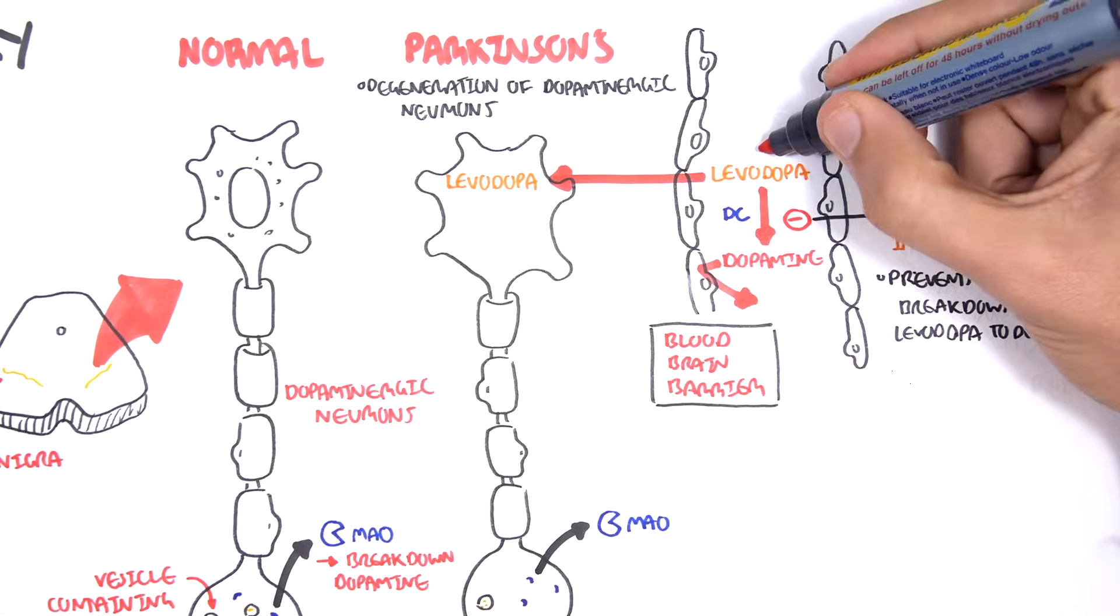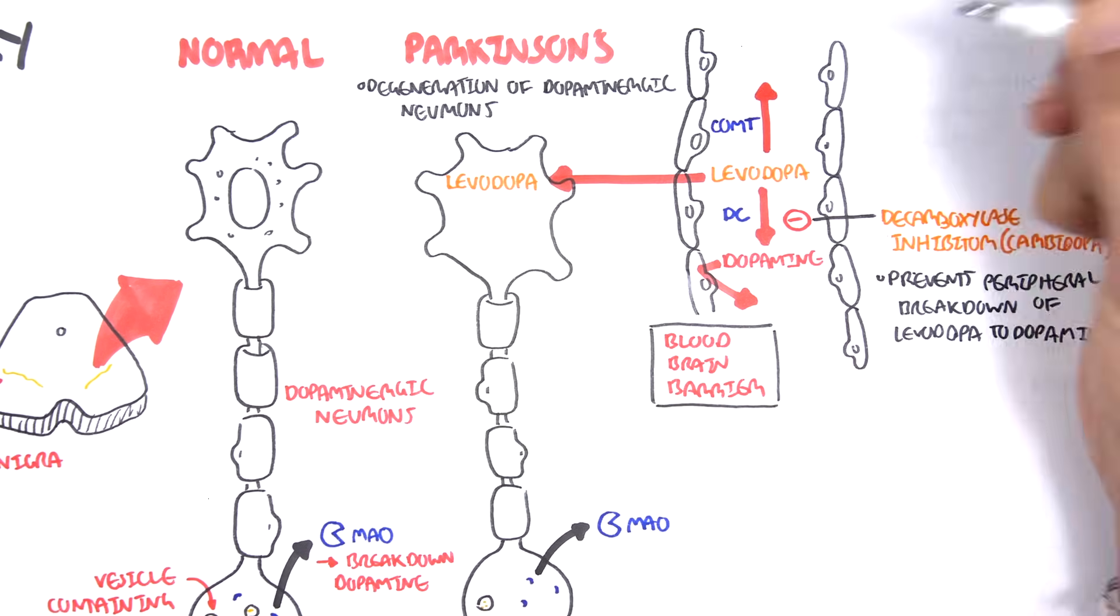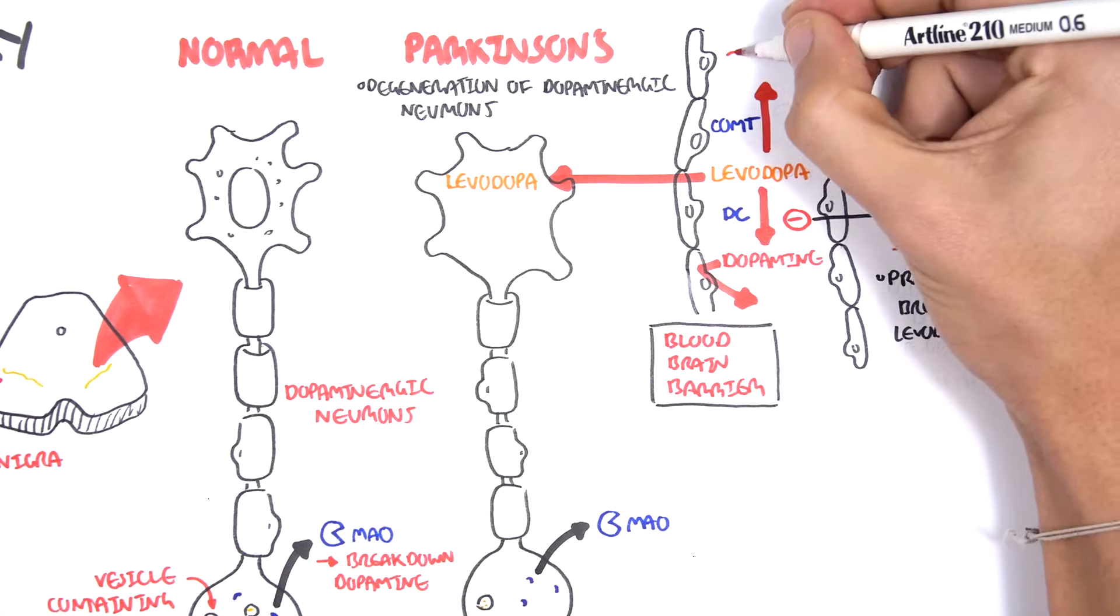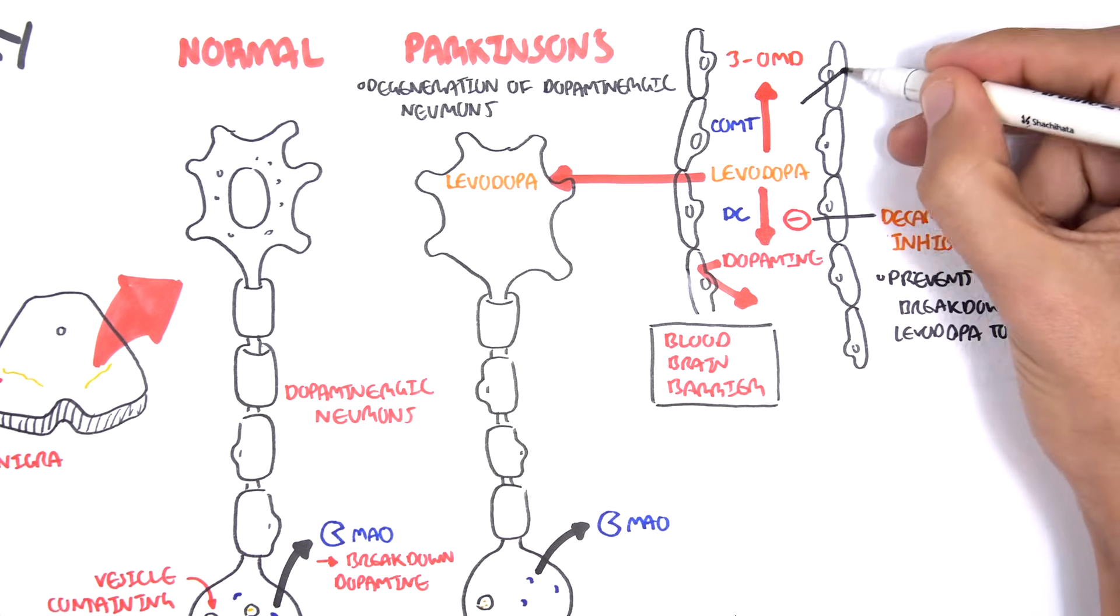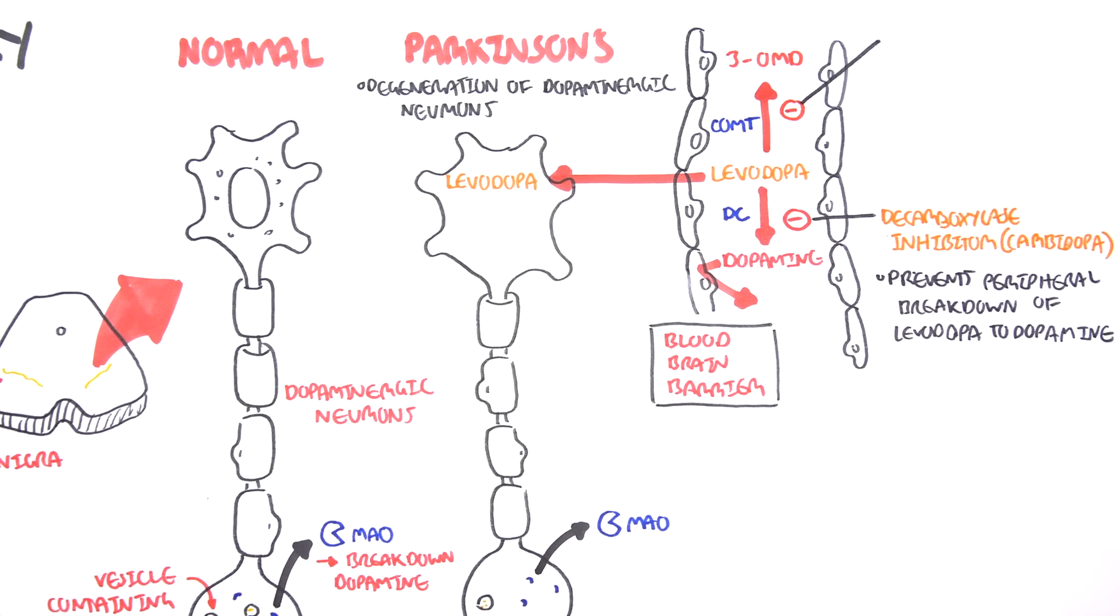However, levodopa in the periphery can also be broken down to 3-OMD by COMT, so you also can administer a COMT inhibitor. COMT inhibitors prevent the peripheral breakdown of levodopa.